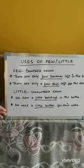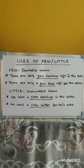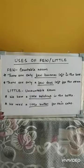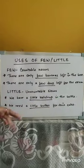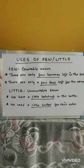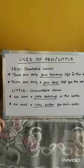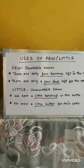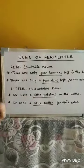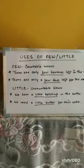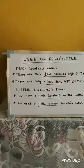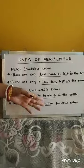Little is used with uncountable nouns — things we cannot count. For example: we have a little ketchup in the bottle. Ketchup, just like milk, juice, or water, cannot be counted, so we use little. Another example: we need a little butter for this cake. We cannot count butter, so we use little before it. Hope we will meet soon — till then, stay safe.